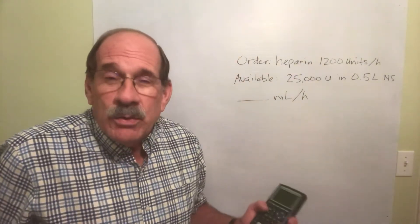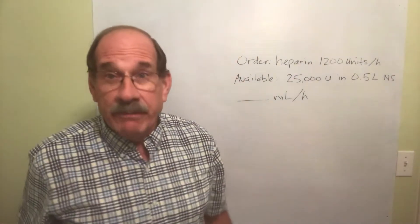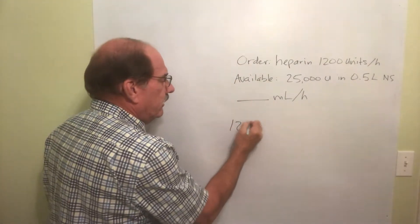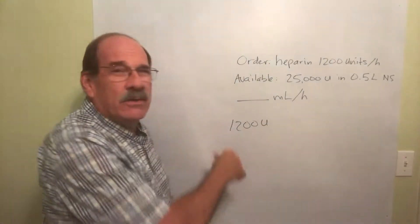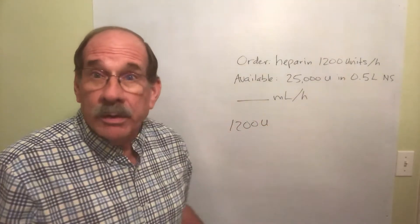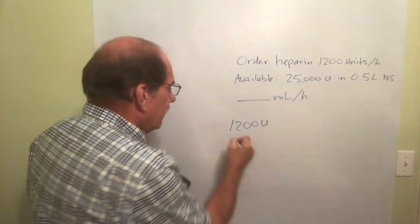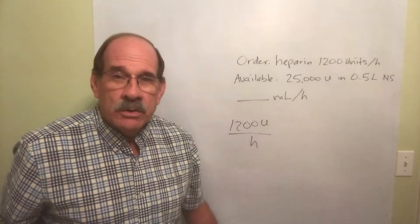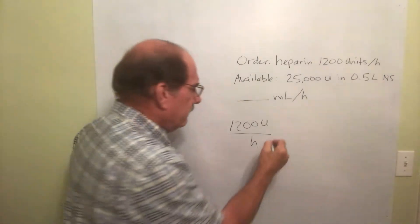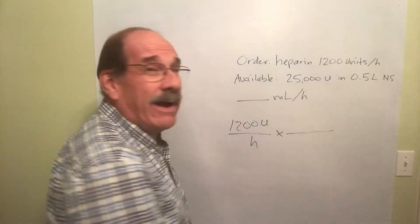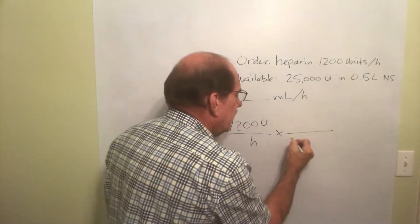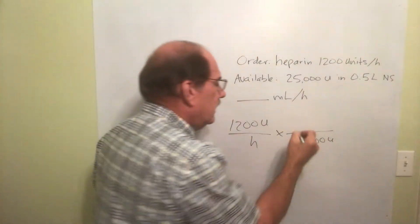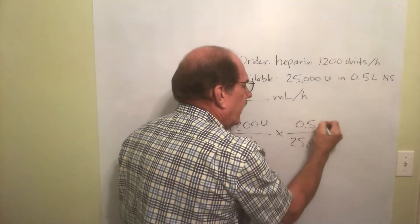Just like we've been doing in the video lecture above, write the order in the following form: 1,200 units. Now you can write units in doing your homework, okay? That's not a violation of federal law. That's per hour. 1,200 units per hour. Well, how strong is this stuff? I've got, wow, that whopping big number, 25,000 units is dissolved in 0.5 liters.